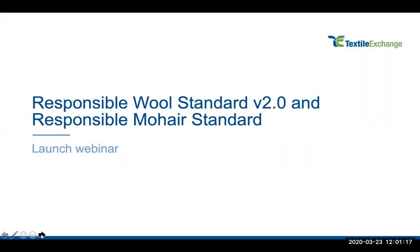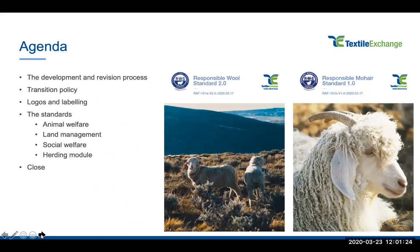Thank you, Rose, and thank you to all the participants who have joined. The agenda for today's webinar: we're going to start off by looking at the development and revision process we have just completed. We're also going to review the transition policy as we shift from RWS 1.0 to 2.0 and the updates to the rules around logos and labelling claims. After that, we'll take a closer look at what has changed in the RWS and what the Responsible Mohair Standard covers and how the two work together, reviewed section by section. At the end we will pause and take questions.